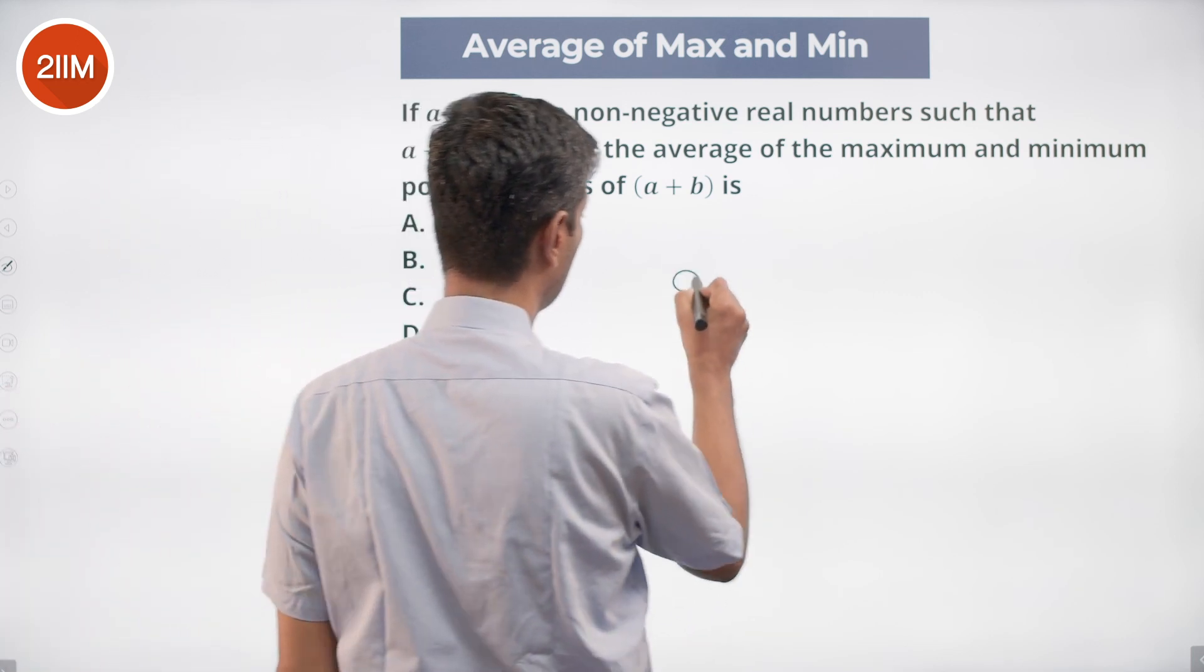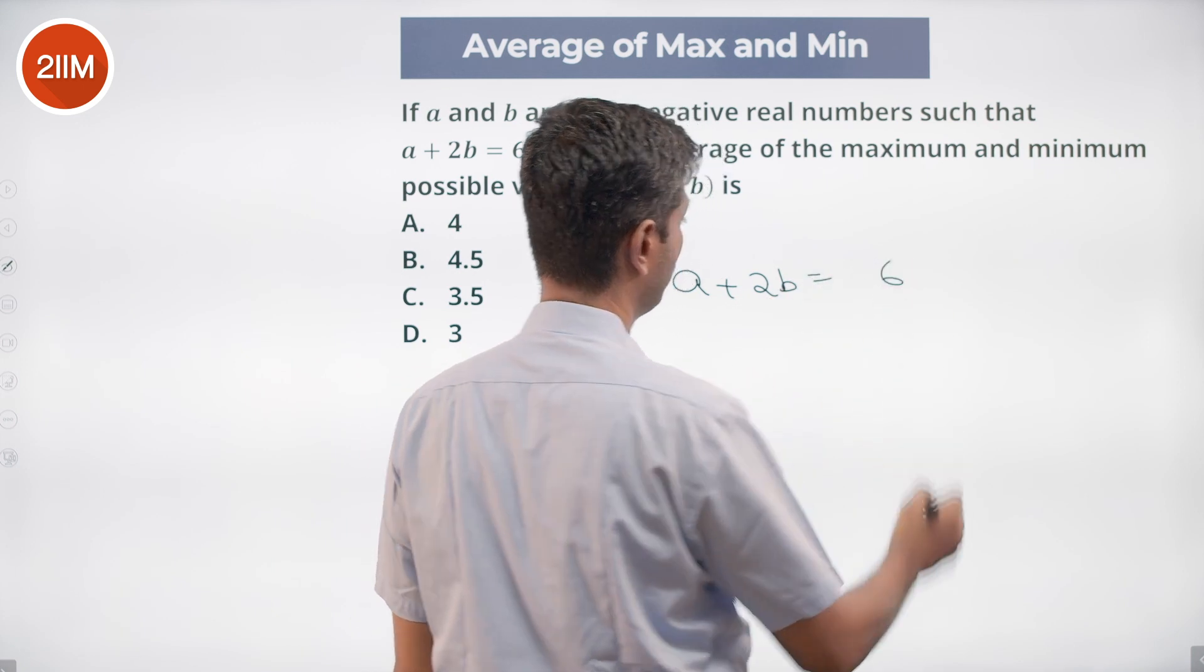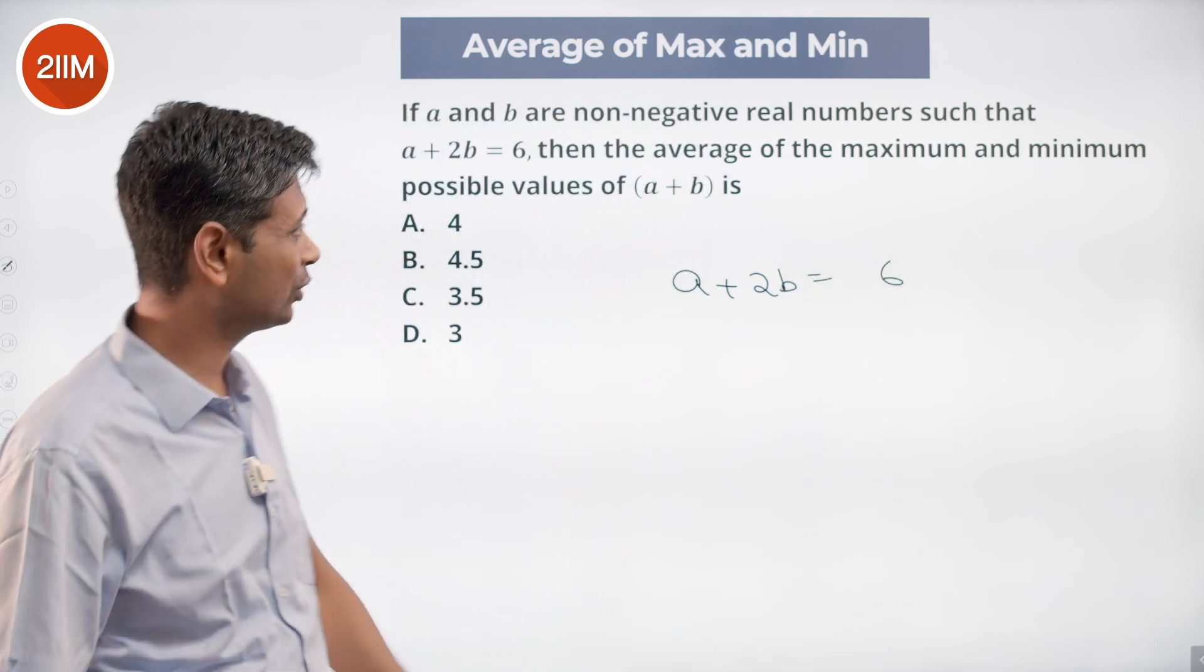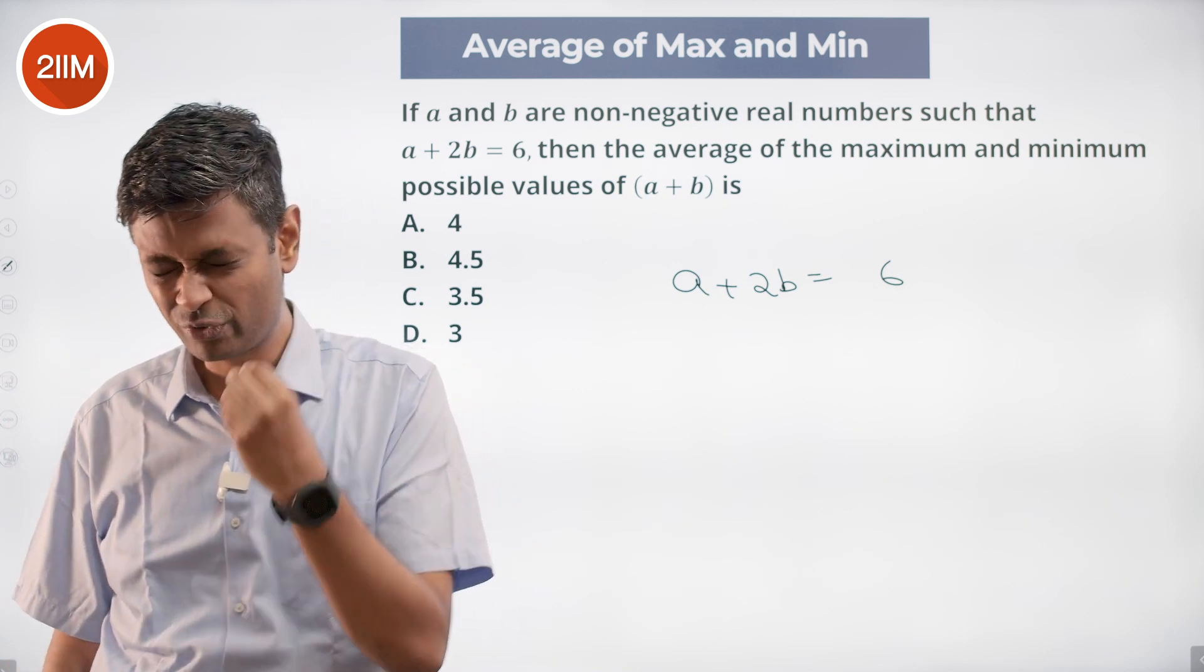We know that a plus 2b is 6. We want to find maximum and minimum possible values of a plus b. Seems like a tricky question. That's actually a freebie.